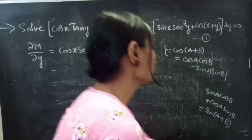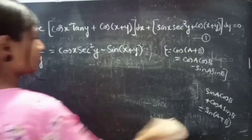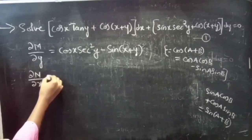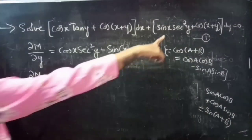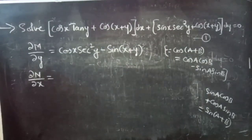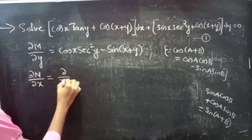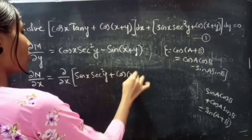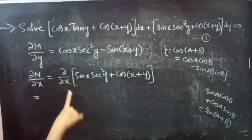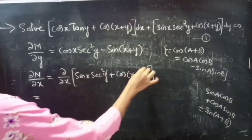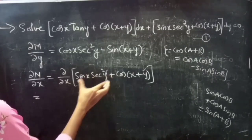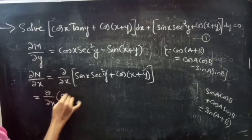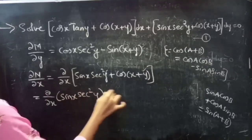Now we will find the partial derivative of N with respect to x. ∂N/∂x, where N equals sin x · secant² y + cos(x+y). Since we are doing partial derivative with respect to x, y is treated as constant, so secant² y is constant from the first term.